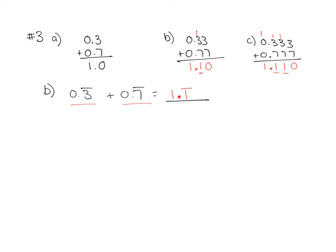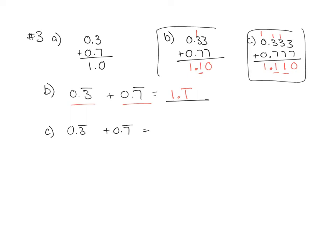Question 3C asks why it's not possible to add 0.3 repeating plus 0.7 repeating by lining up the decimals. We notice that every time we have a 0 on the end, but if you keep repeating the 3 and 7, it will keep pushing the 0 over and we will never get there. That's why it's inaccurate — it would be 1.1 repeating, but it will look like there's a 0 at the end even though there isn't.